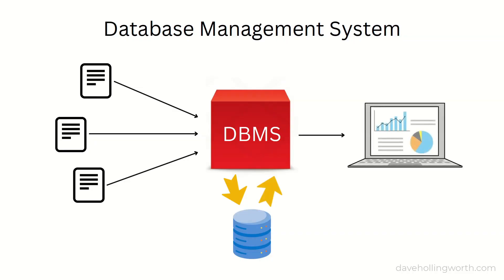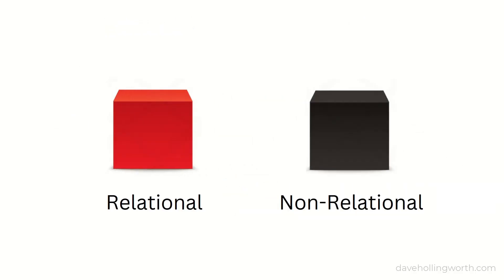There are two main types of database management systems: relational and non-relational. Non-relational databases are sometimes called NoSQL databases. I'm only going to look at relational DBMSs in this video.